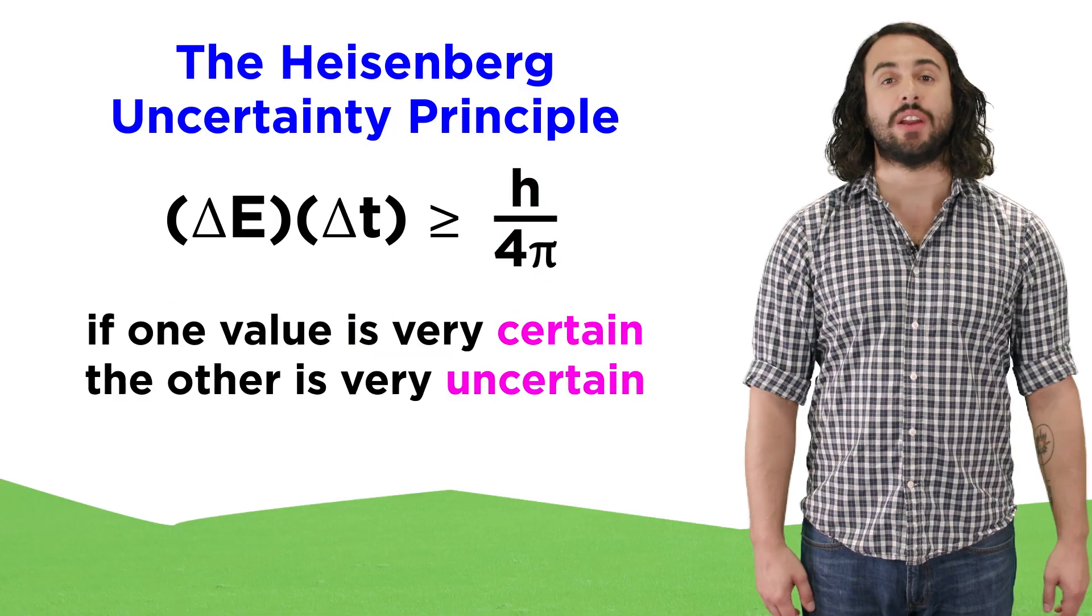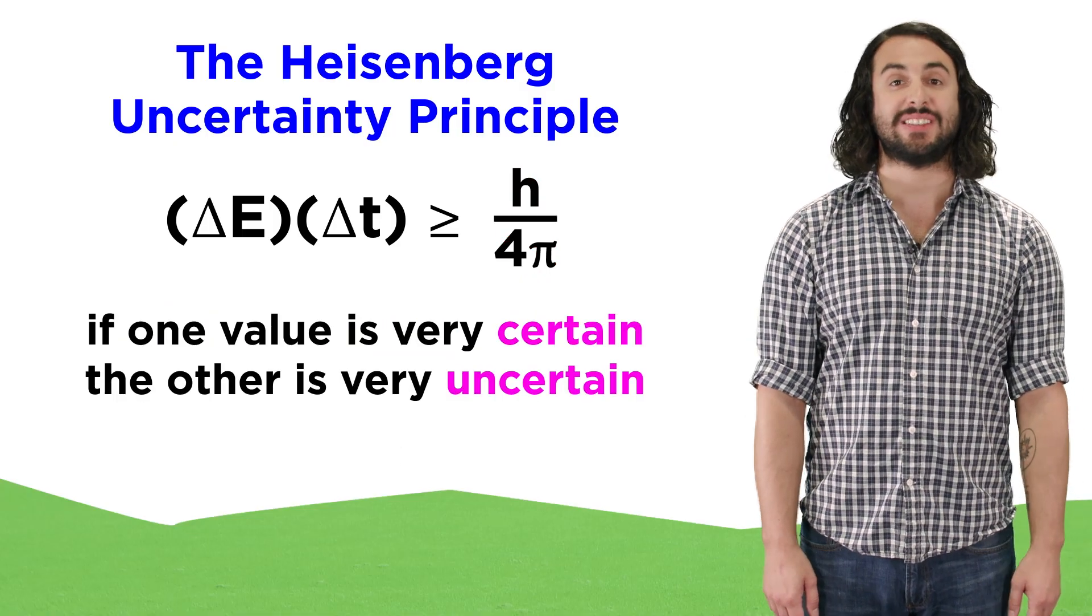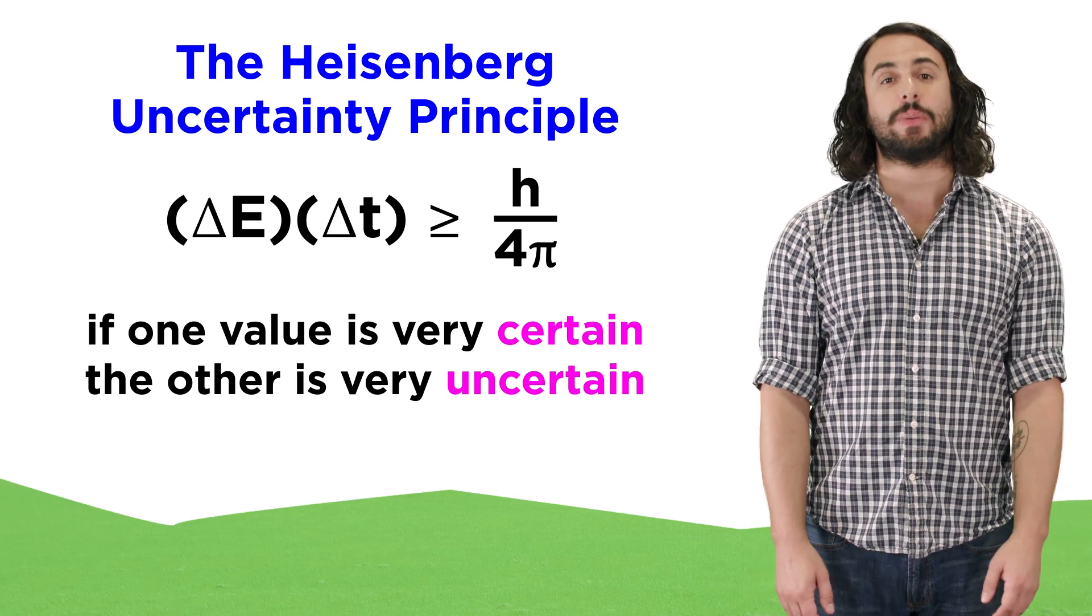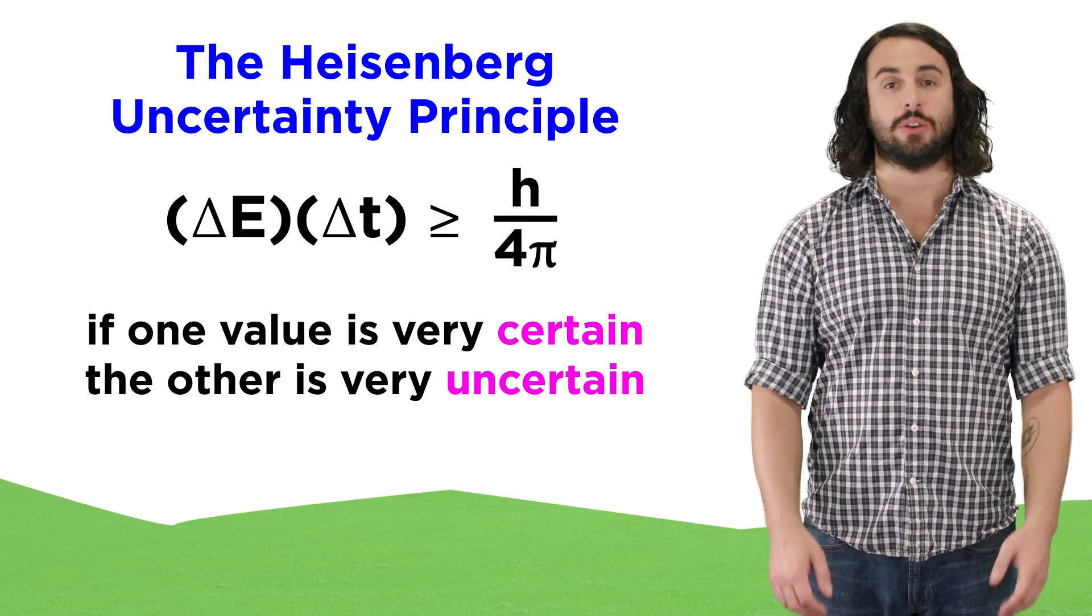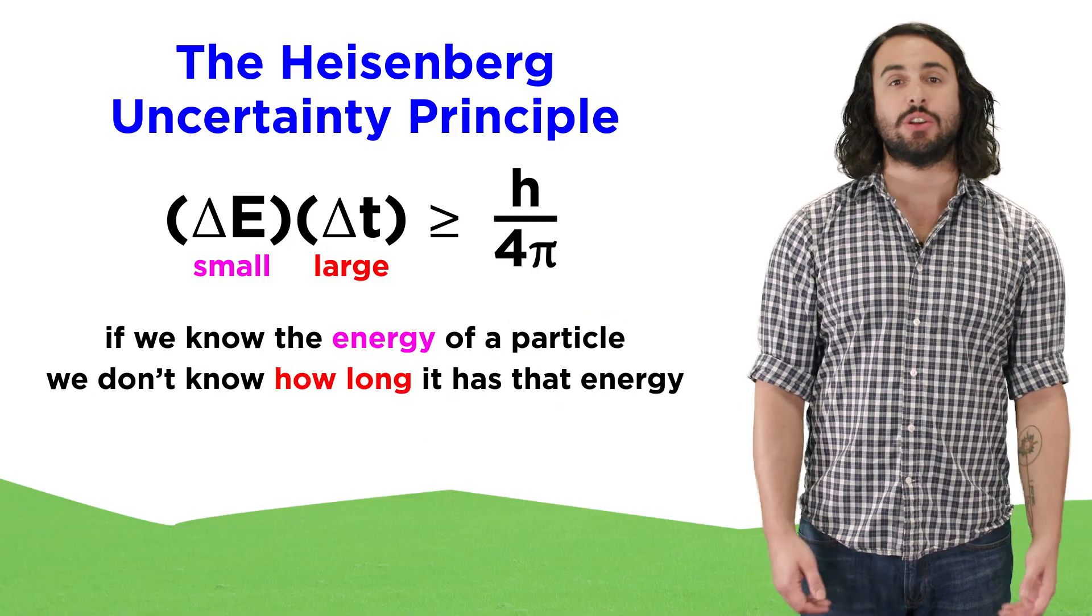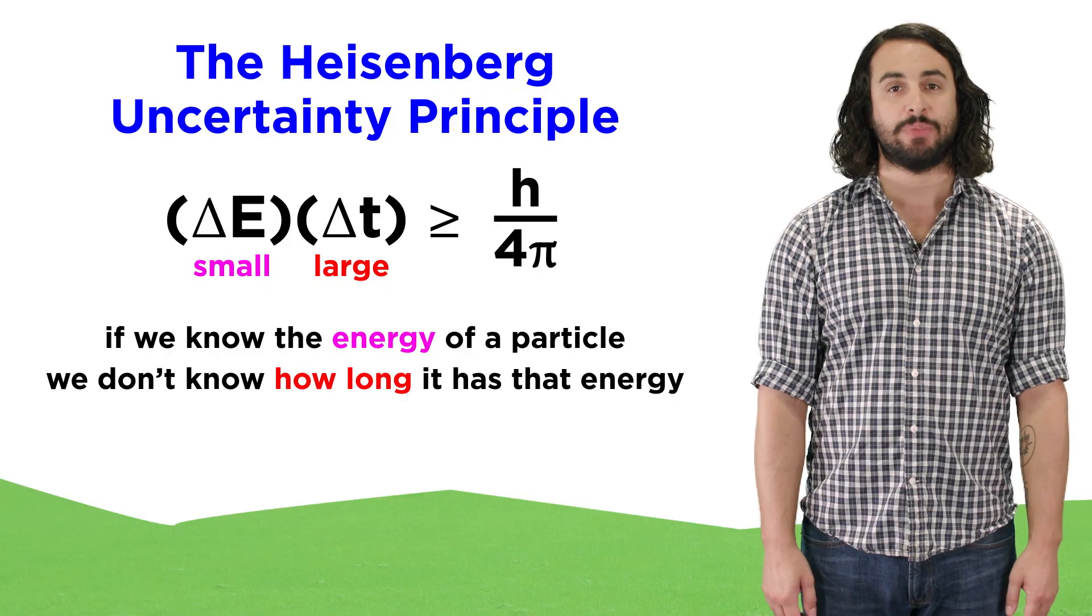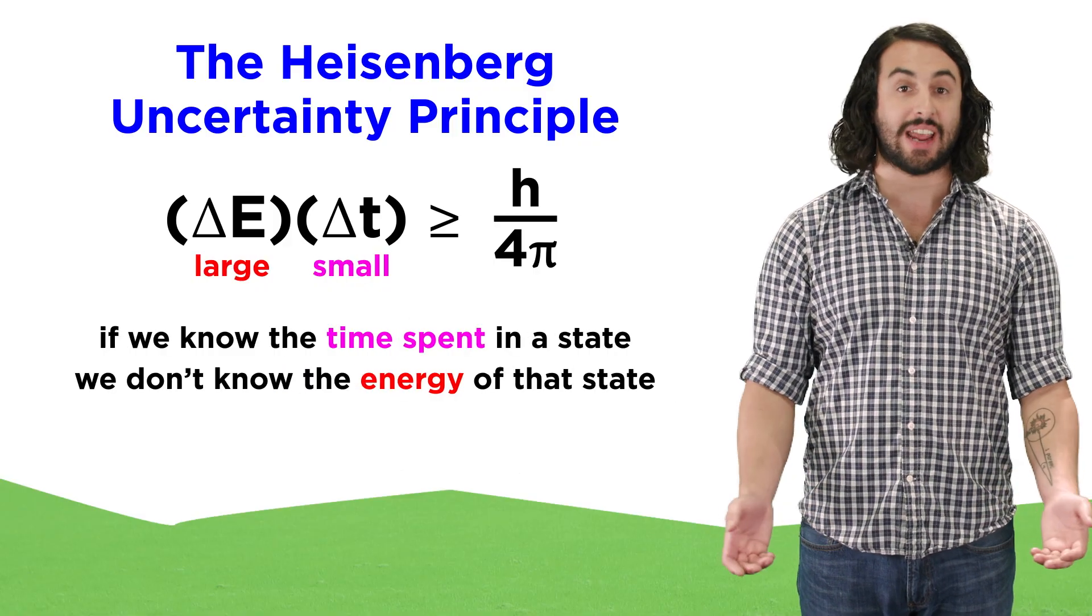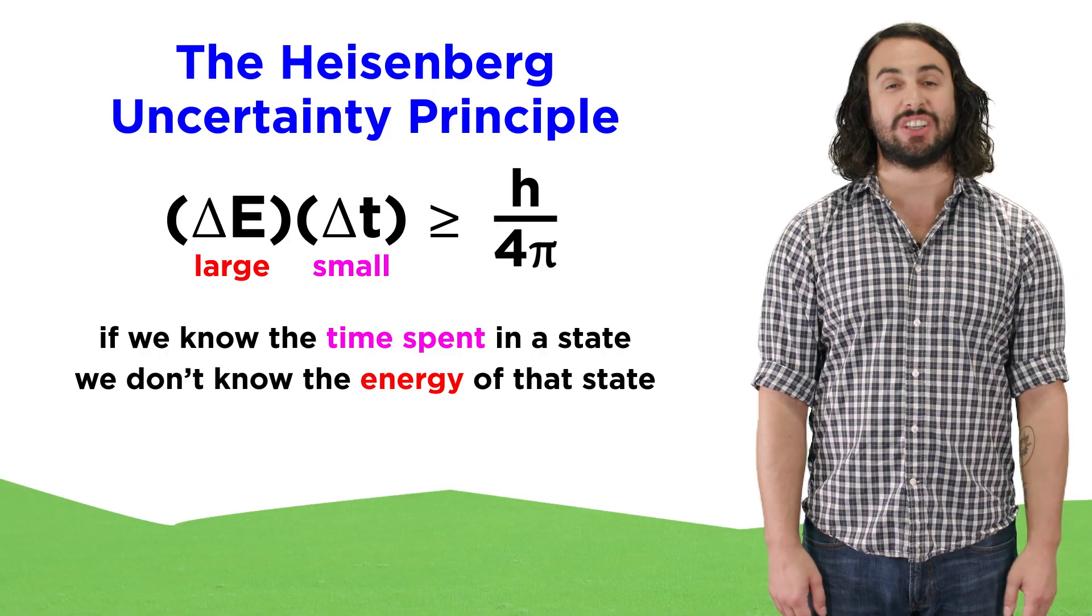If the uncertainty in one of these parameters is very small, that is to say if one of the two values is very certain, the other becomes increasingly uncertain. So if we know the precise energy of a particle, we don't know how long it has that energy. If we know precisely how long a particle exists in a certain state, we don't know how much energy it possesses.